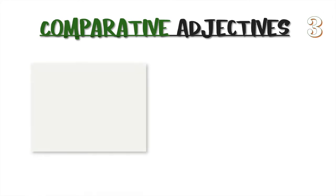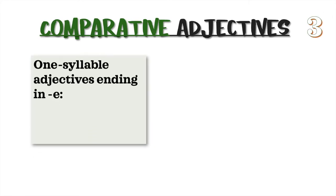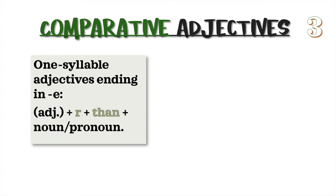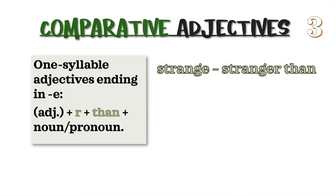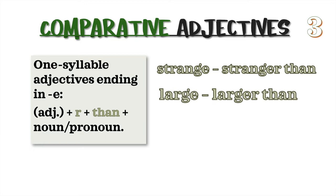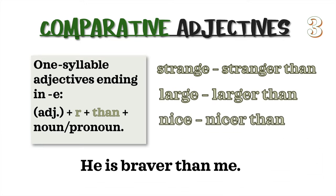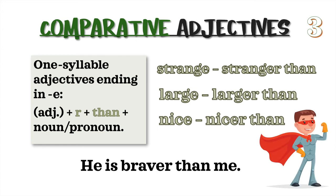Rule 3: One syllable adjectives ending in e. We take the adjective and add -r, then than, then noun or pronoun. For example: strange → stranger than; large → larger than; nice → nicer than. Example sentence: He is braver than me.